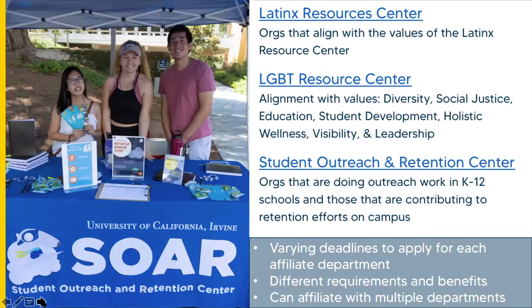The Leinden Resource Center and the LGBT Resource Center provide support to campus organizations that align with their values. The Student Outreach and Retention Center provides funding for organizations that outreach to K-12 schools and support retention efforts on campus. Every organization can apply to affiliate with any of these departments and may choose to affiliate with multiple. Be sure to visit each department's website for information on requirements and deadlines, or visit the department affiliation site on campusorgs.uci.edu under the resources tab.